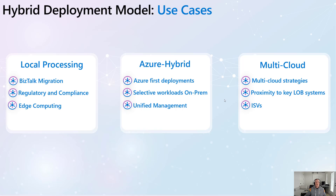We've talked to a lot of customers about this deployment model, and I'd consider three different core buckets of use cases. The first is where you've got local processing needs — BizTalk migration is typically a popular one, where people have existing BizTalk workloads. Some may move to the cloud, but other workloads may need to continue running on premises due to proximity of systems or regulatory and compliance needs. Edge computing is another element, where you need local processing on the edge and may need to survive transient internet connectivity situations.